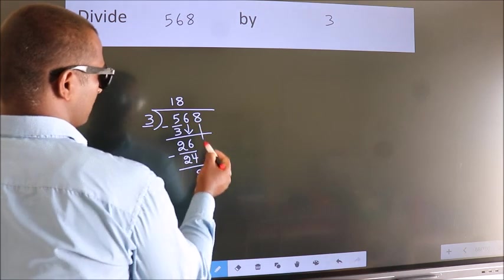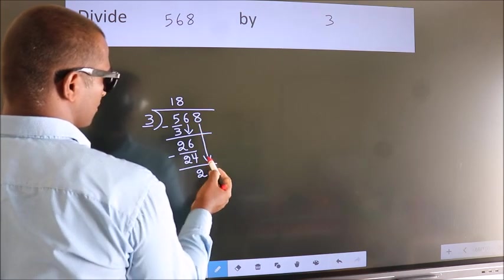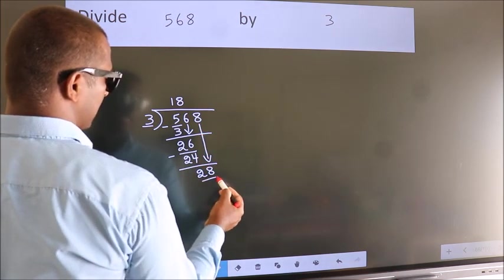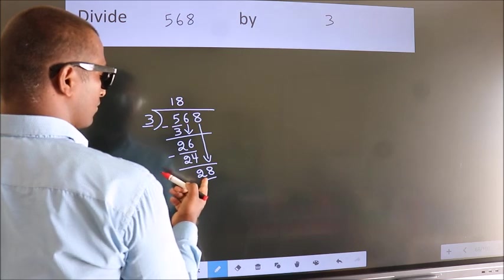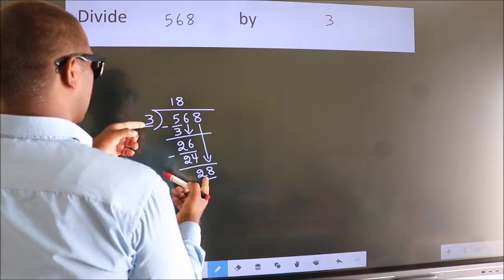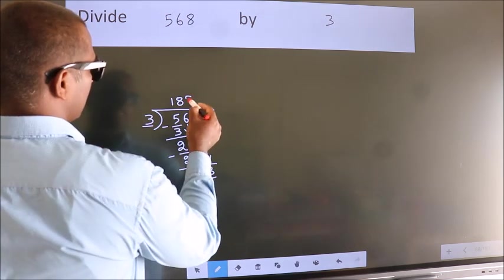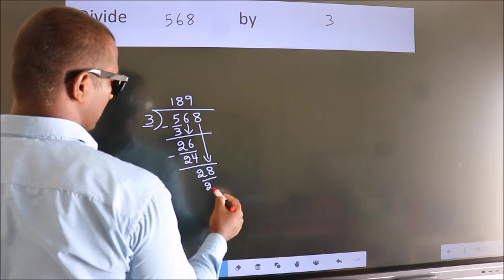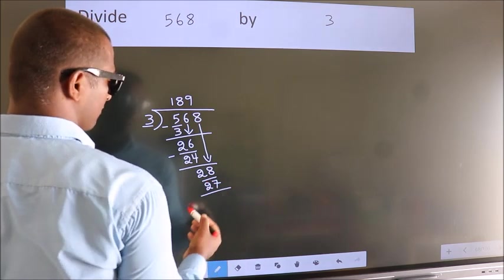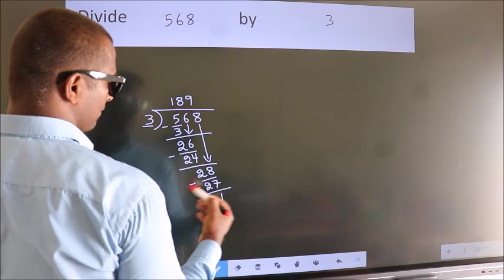After this, bring down the beside number. So 8 down. So 28. A number close to 28 in the 3 table is 3 nines 27. Now we subtract. We get 1.